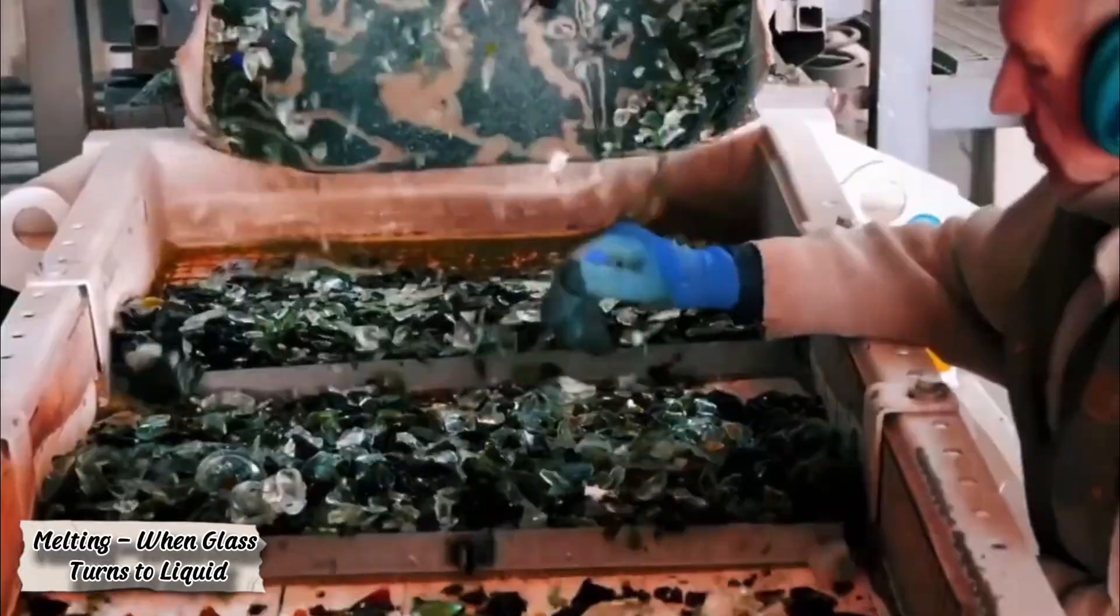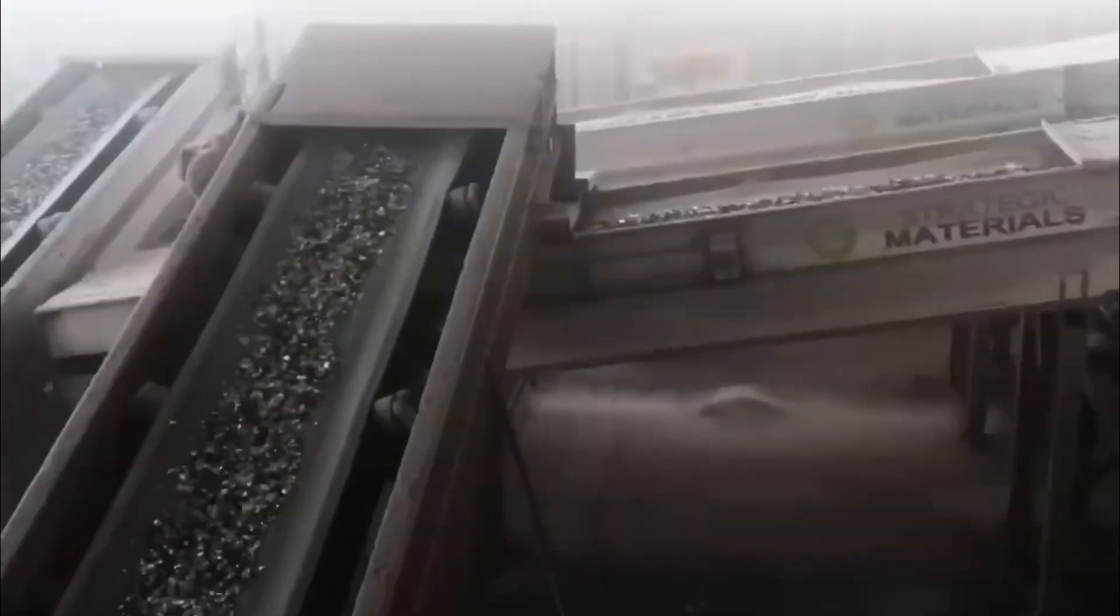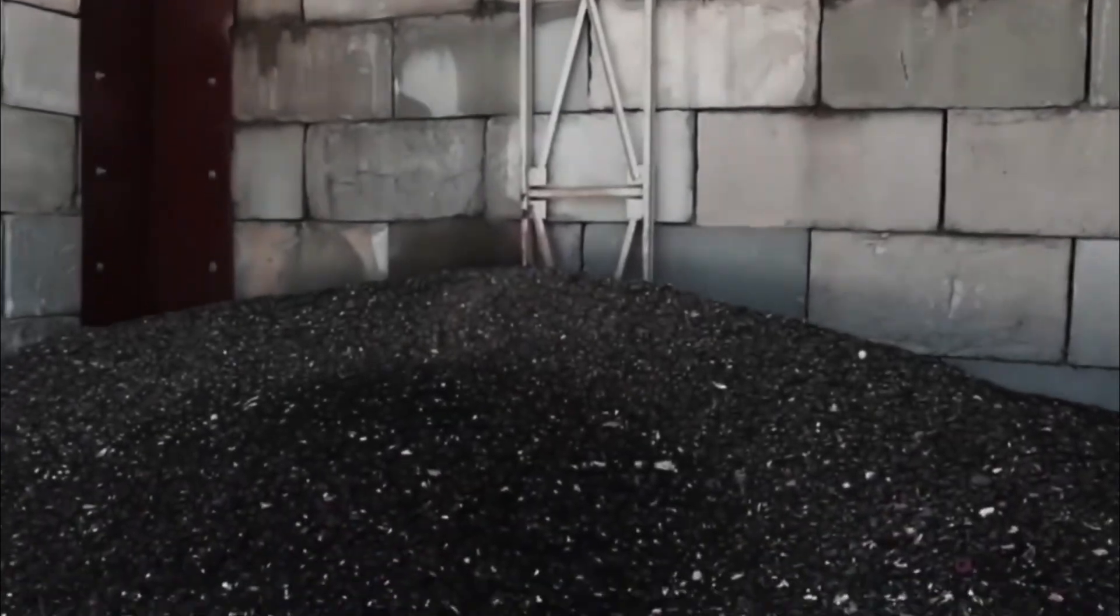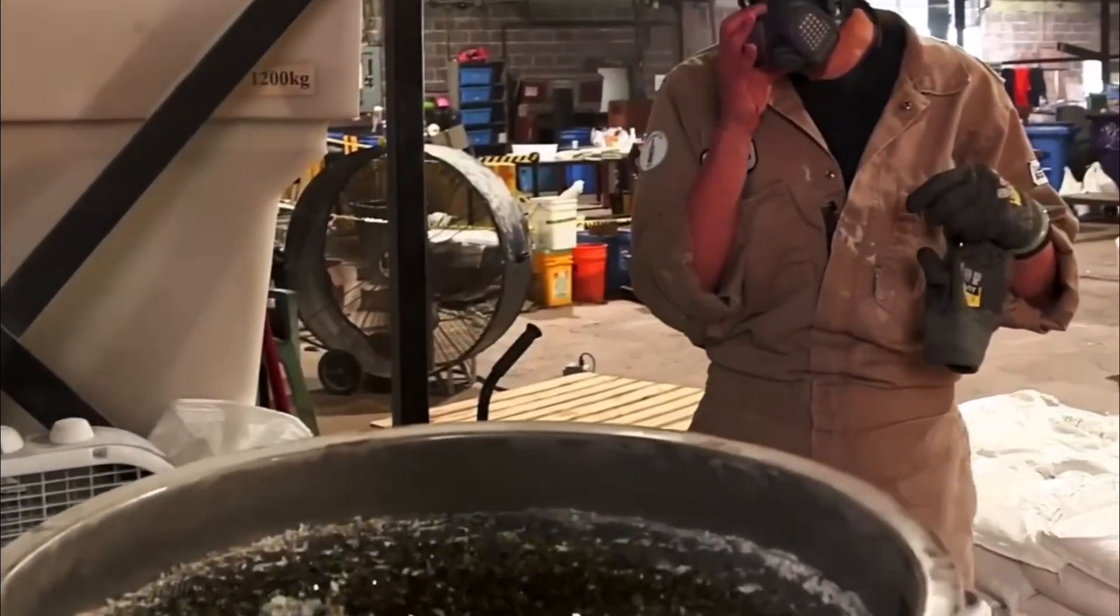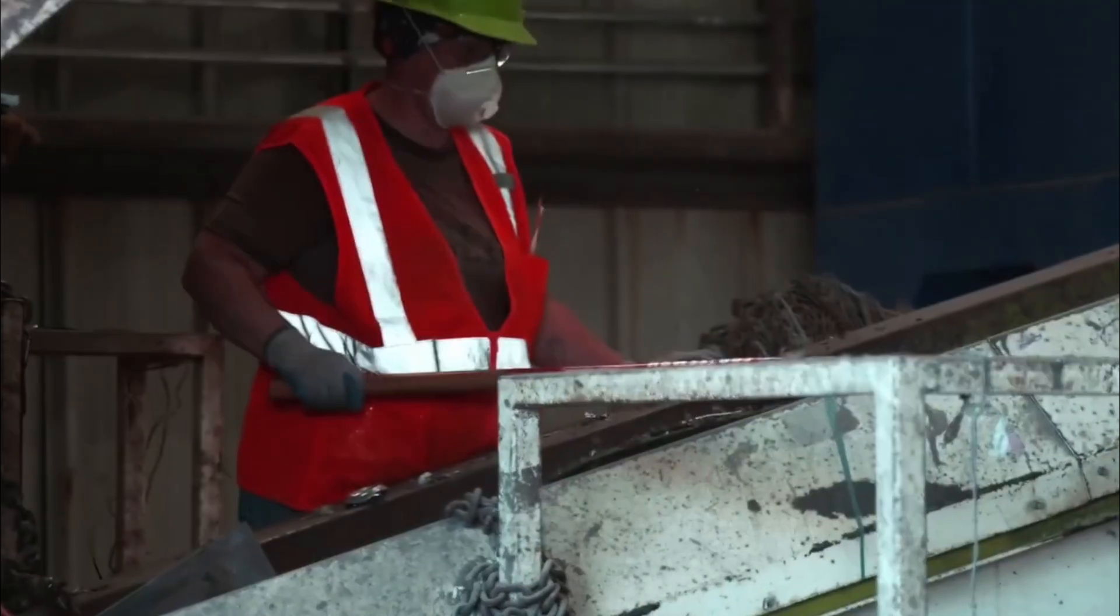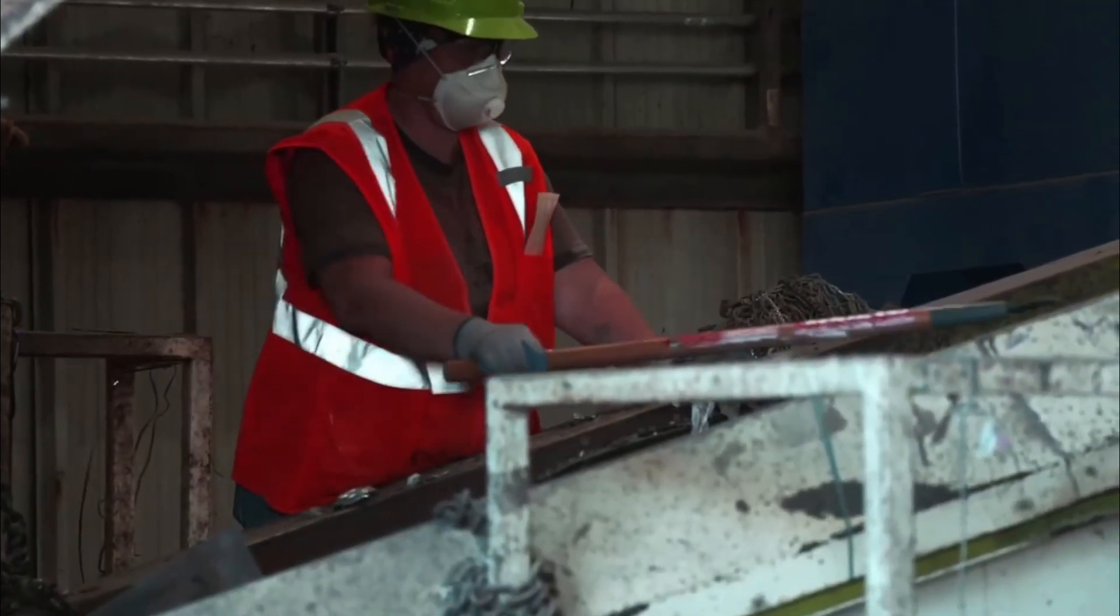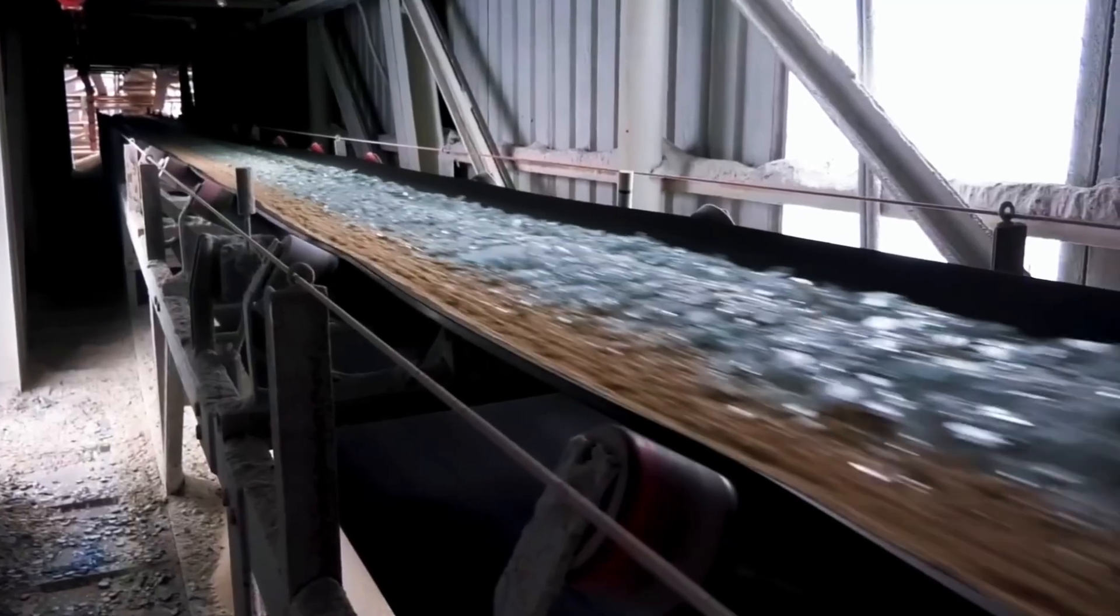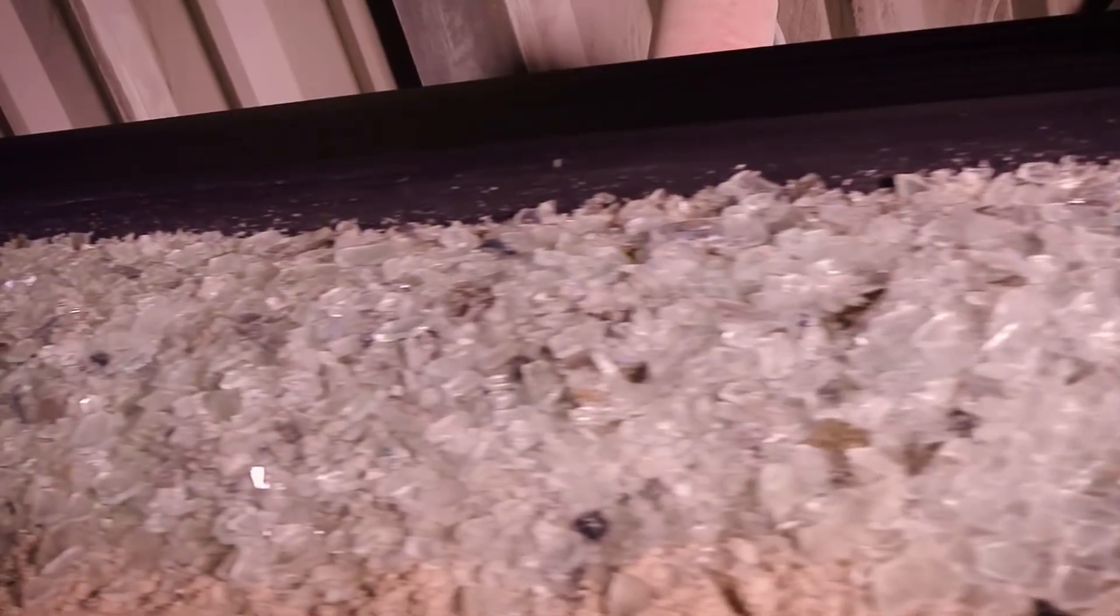Now begins one of the most mesmerizing processes of all. At temperatures exceeding 1,300 degrees Celsius, the cullet melts into a glowing, viscous lava of liquid glass. The furnace roars, metal walls vibrate, and the air shimmers with heat. The molten glass flows into a mixer where a crucial ingredient is added: the foaming agent, most often carbon or sulfates, which release gas when heated.